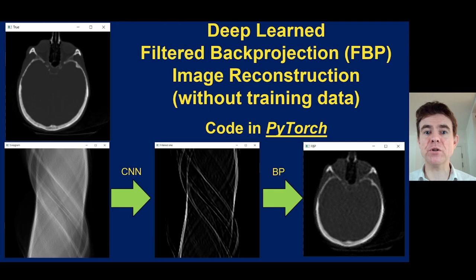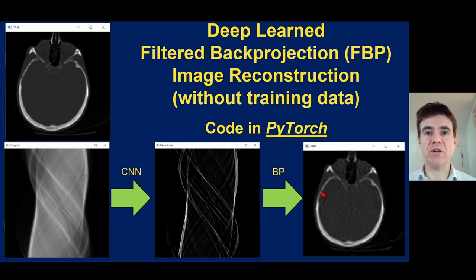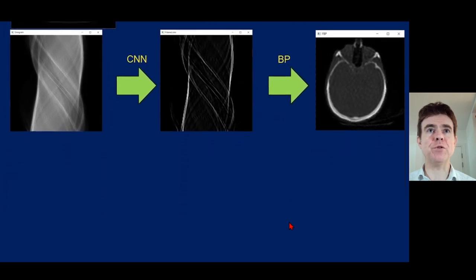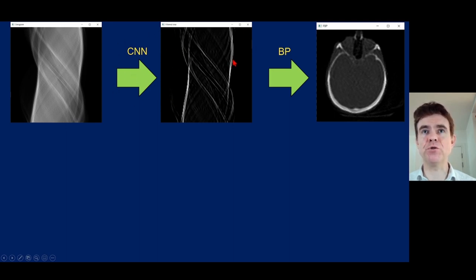Normally we'd use a ramp filter. I'm showing that we can use deep learning to learn the correct filter. We're going to apply a two-dimensional convolutional neural network to the sinogram to filter it, then back project it to get our reconstructed image. The starting measured data goes through the CNN to give a filtered sinogram, which we then back project to give the reconstructed image.